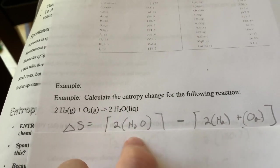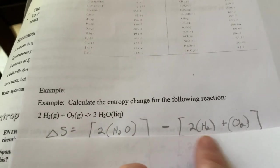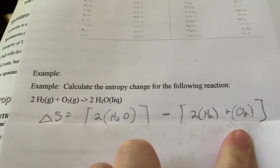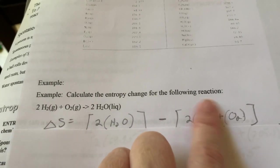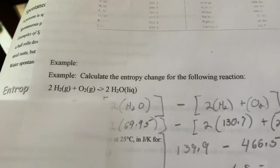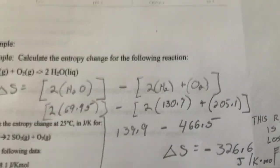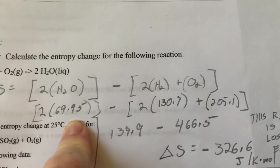From that I'm going to subtract what's going on with my reactants. I have two hydrogens again from the coefficient and I have only one oxygen, and I'm going to add those all together. Whatever this total is I will subtract from that total. The 69.95 directly from that table in your notes, the 130.7, the 205.